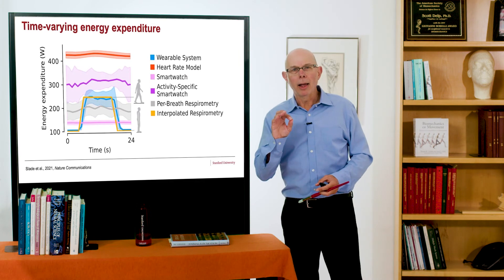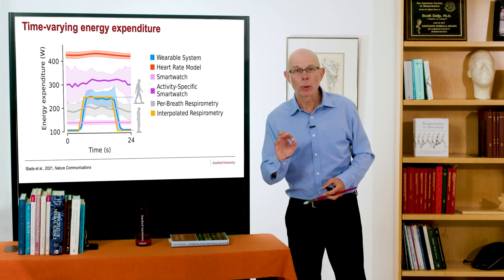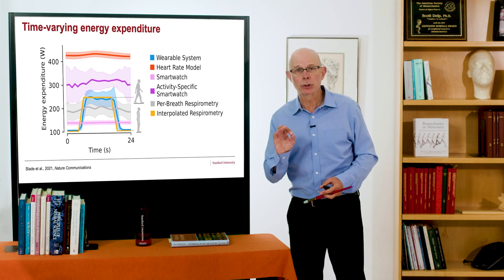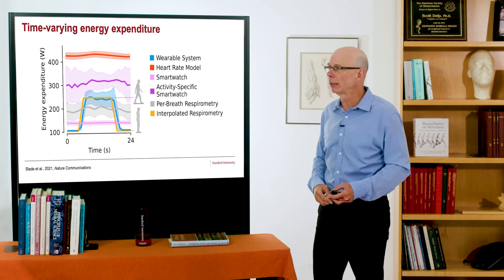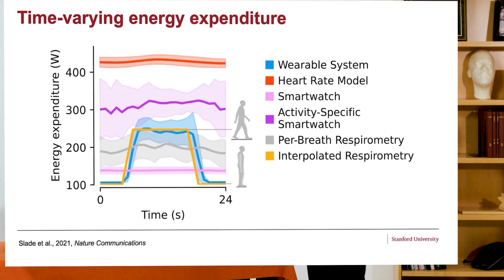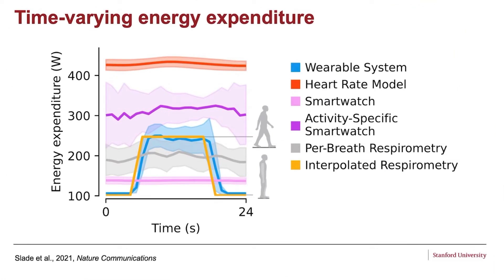Now, that steady state error, we also want to be able to estimate energy expenditure during time varying activities, and we can do that quite well. So the wearable system here is shown in blue, and we're tracking interpolated gold standard measurements here. You see it works pretty well. The heart rate monitor doesn't pick up changes. The smartwatch activity doesn't really do an accurate job. So these time-varying things are pretty nifty.